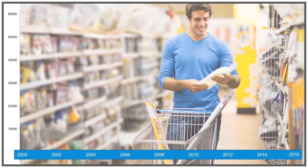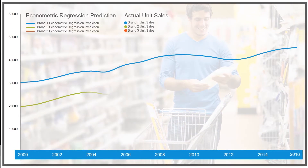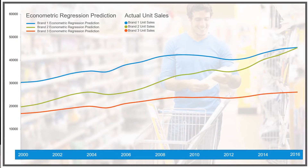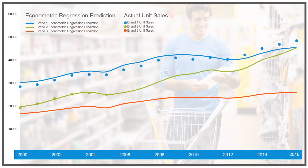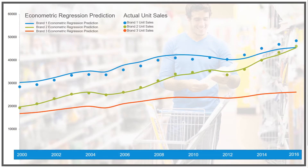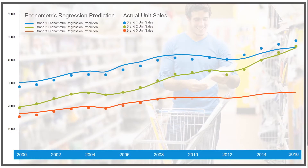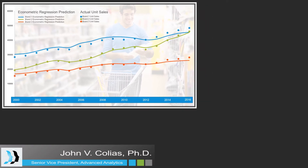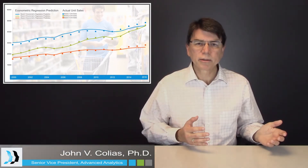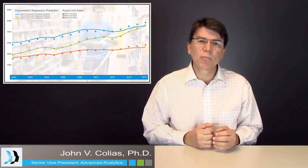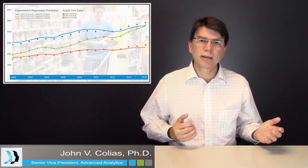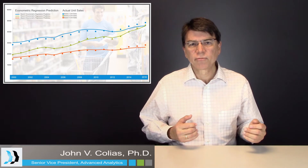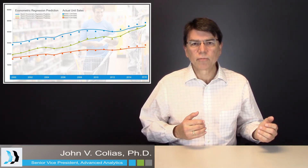First, econometric modeling reduces the bias in measurement — that's its first advantage. Second, it accurately isolates the impact of media on sales from the impact of all of the other factors that influence sales. Both of these key advantages are very important, and suffice it to say that econometricians and statisticians have for decades developed methods that accomplish these benefits.